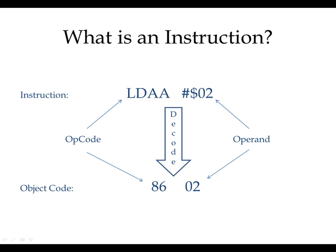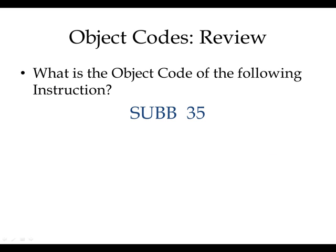We'll first look at an instruction. To find out the object code of an instruction, we first want to know the addressing mode. Now we know what addressing mode is, so we can identify it. What is the addressing mode of this instruction? Check your set of instructions — we always need the set of instructions. The addressing mode here is direct.